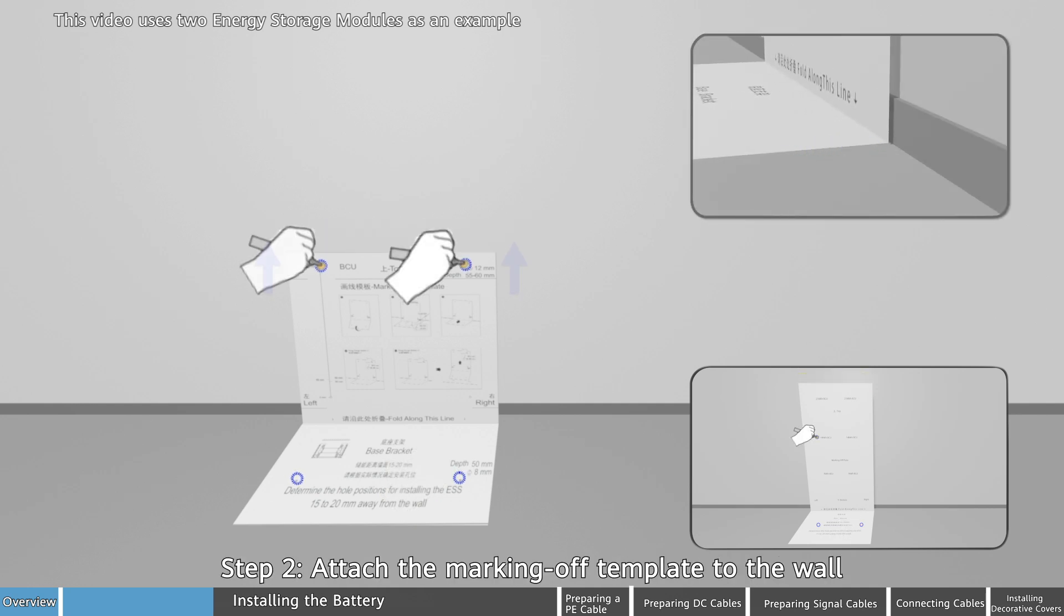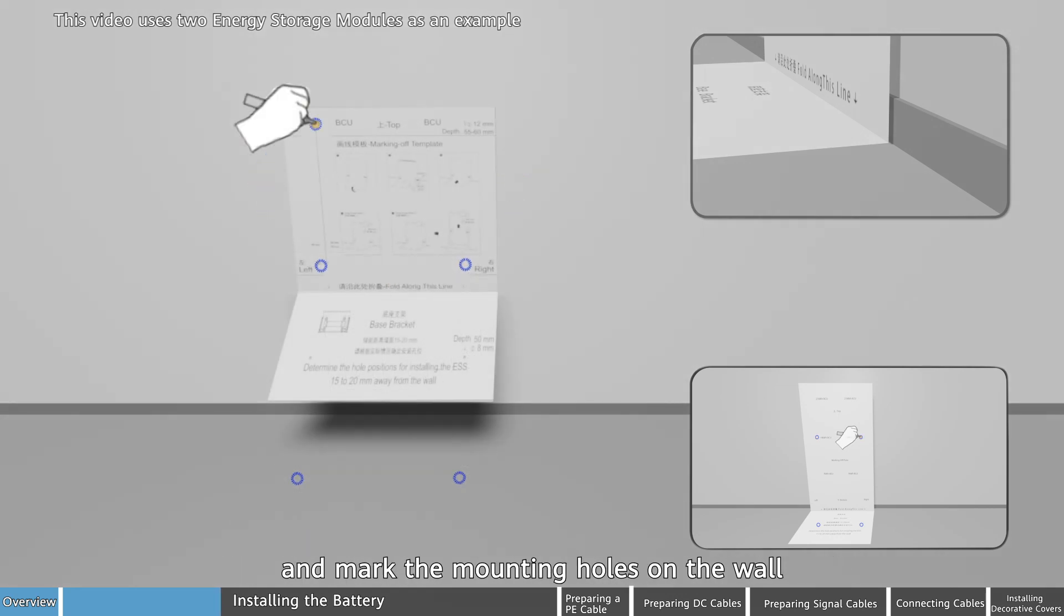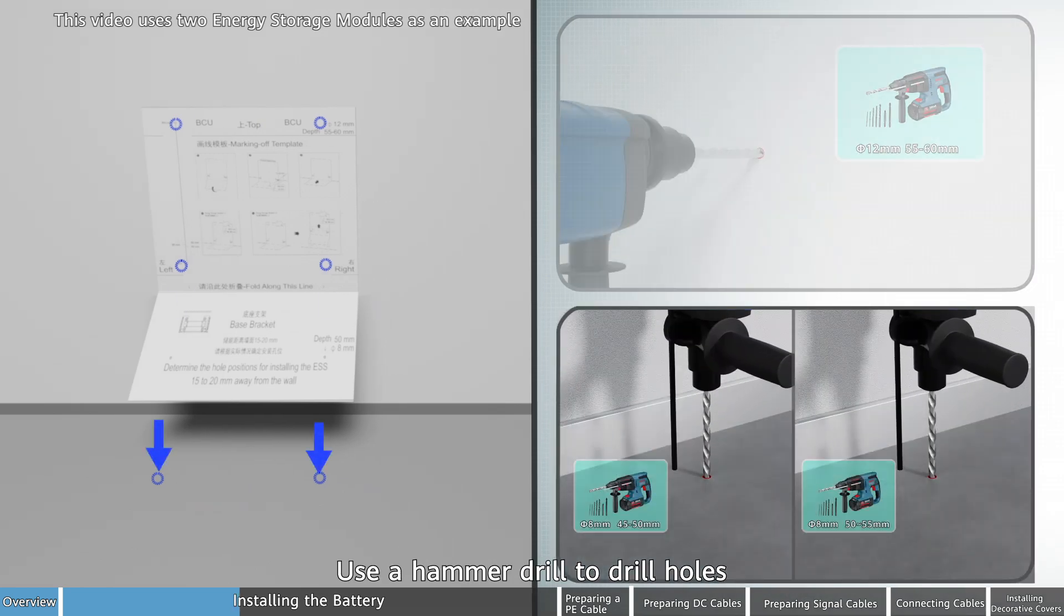Step 2: Attach the marking off template to the wall and mark the mounting holes on the wall. Use a hammer drill to drill holes.